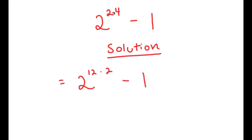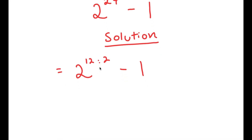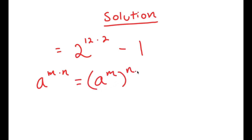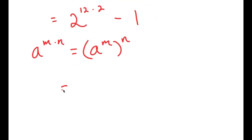All I did was rewrite 24 as 12 times 2. Now, if I have something in the form a to the power of m times n, this is equal to a to the power of m to the power of n. So, 2 to the power of 12 times 2, I can rewrite this as 2 to the power of 12, to the power of 2.